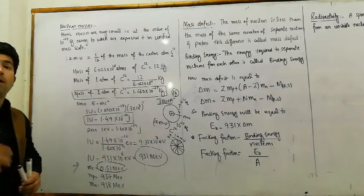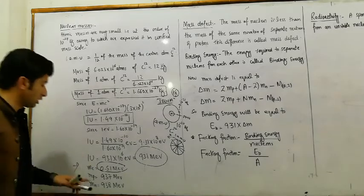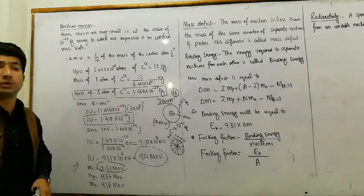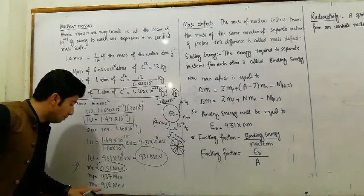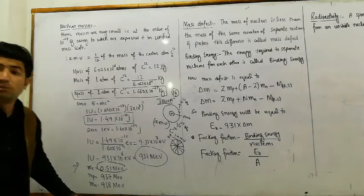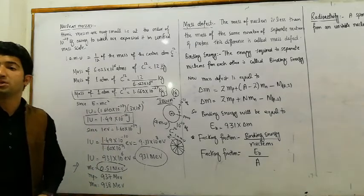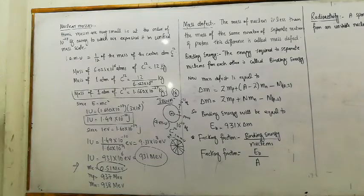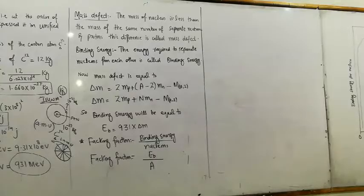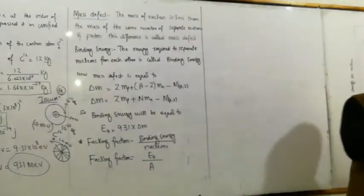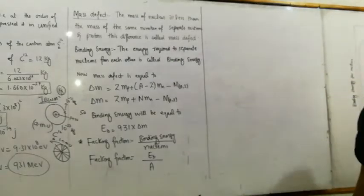The mass of the proton, when completely converted to energy, gives 937 mega electron volts. The mass of the neutron, when completely converted to energy, gives 938 mega electron volts.